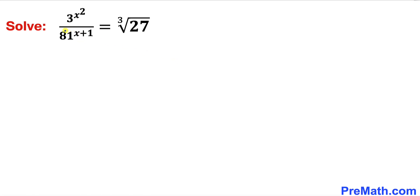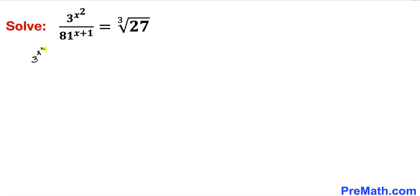Let's scan these numbers. Let's focus on this base 81. 81 could be written as 3 to the power 4, and likewise this 27 could be written as 3 to the power 3. So therefore this problem could be written as 3 to the power x squared divided by 3 to the power 4, whole power x plus 1, equal to the cube root of 3 to the power 3.